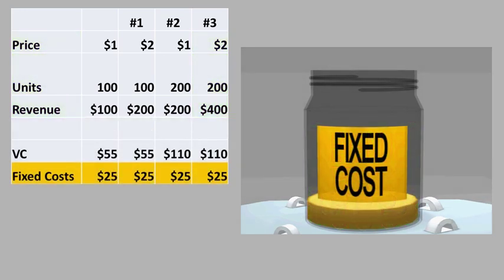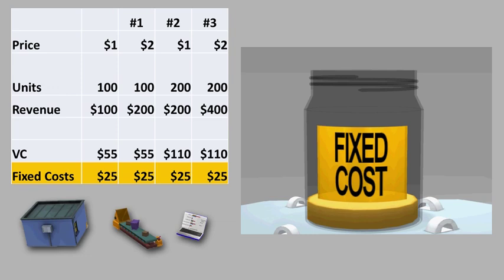Fixed costs are costs that do not change based on the number of units sold. We can represent them as a solid layer in the jar. These include buildings, equipment, software, and other similar costs.